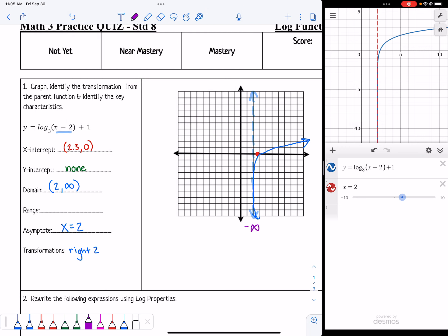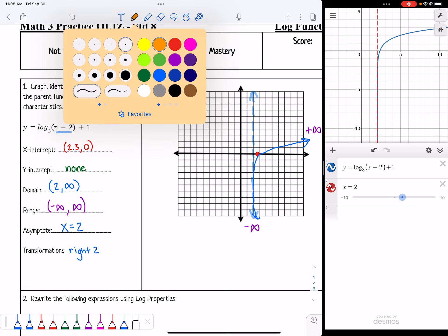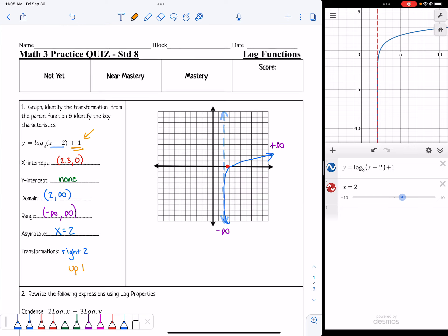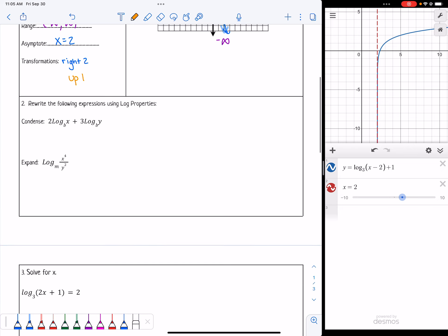The range goes with how low the graph goes, which is down forever, so that's negative infinity, and then how high it will go is forever as well, so that's positive infinity. The only other thing we need to write is there's one more transformation. This plus 1 outside of the grouping symbol will make this shift up 1. That's it for number 1.